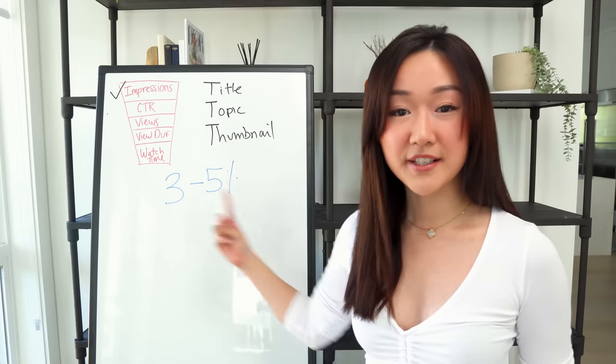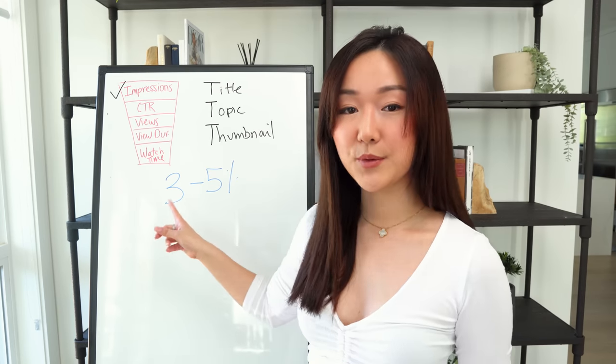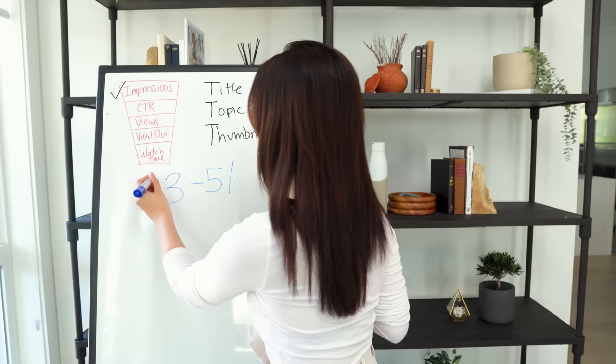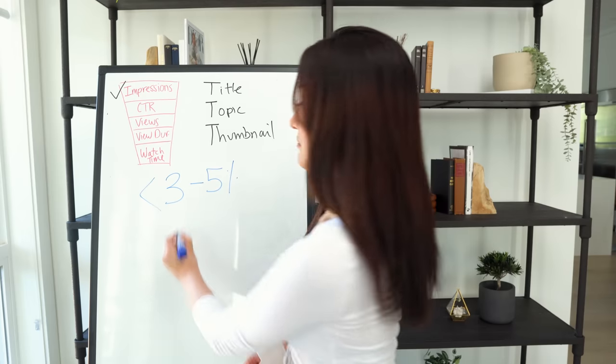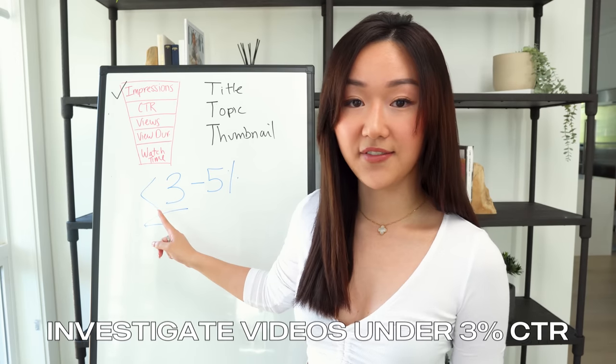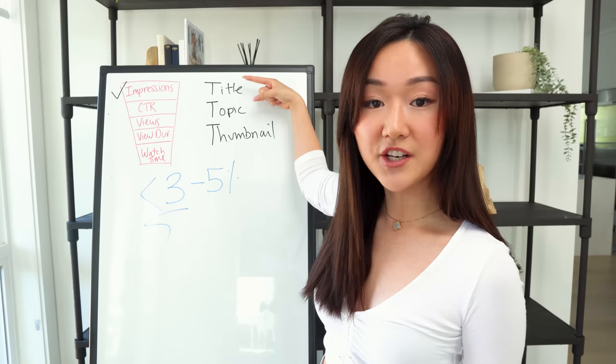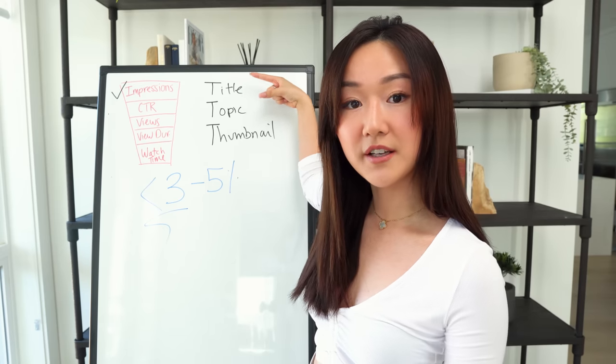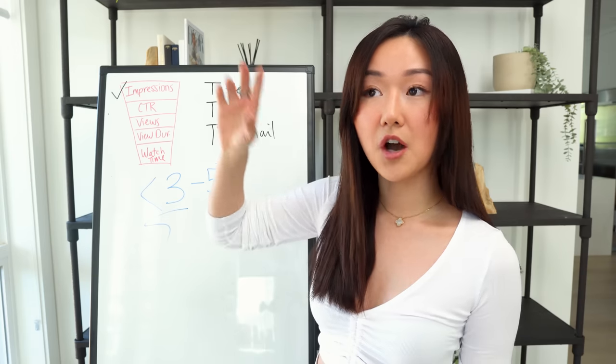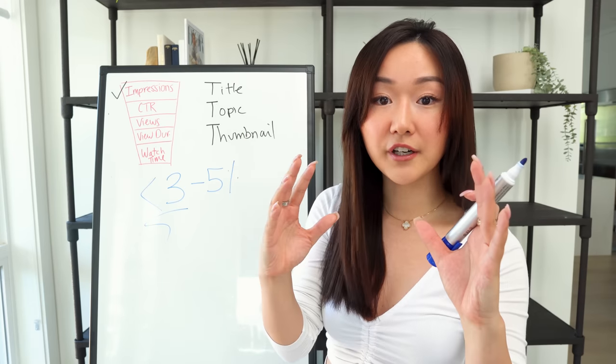Let's talk benchmarks. What do you need to hit to be considered average when it comes to click-through rate? Three to 5%. If you're anywhere between three to 5%, you're doing good — that's normal. But if you're noticing that certain videos are less than 3%, you're going to want to investigate that and figure out what changed that caused it to go under 3%.